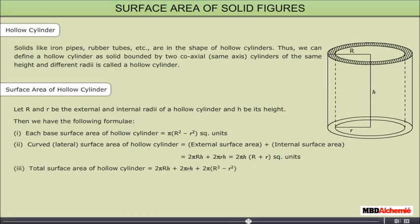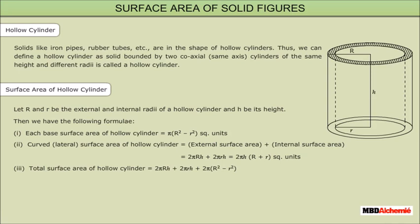Total surface area of a hollow cylinder = 2πh(R + r) + 2π(R² − r²) = 2π(R + r)(h + R − r) square units.